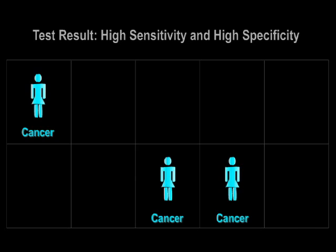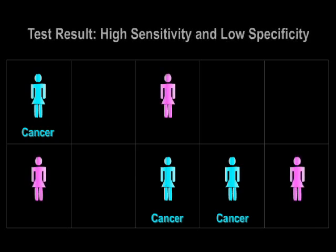If the same test detected all three cancers but also incorrectly identified three normal samples as cancerous, or false positives, it would have high sensitivity but reduced specificity.